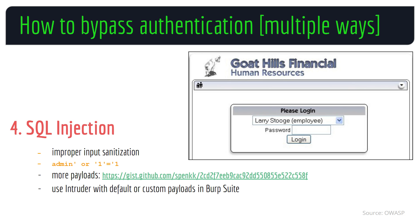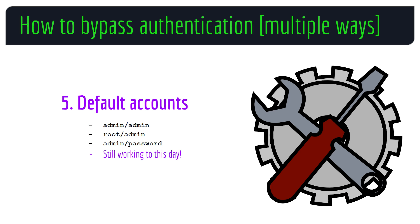Alongside the aforementioned methods from OWASP, I'd also like to add two more. Number five: authentication bypass using default accounts. The attacker takes advantage of weak or easily guessed default credentials to gain unauthorized access to the app. Many applications ship with default accounts that have well-known usernames and passwords such as admin/password, admin/admin, root/password, and so on.